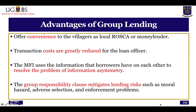The advantages of group lending include convenience for villagers in a format similar to ROSCAs or moneylenders, and greatly reduced transaction costs for loan officers, since the burdens of chasing up, monitoring, and screening are reduced. MFIs use the information that borrowers have on each other to resolve information asymmetry. The information that neighbours and friends have on one another becomes the foundation for the MFI's operations, and group responsibility mitigates lending risks such as moral hazard — where borrowers might misappropriate funds — as well as adverse selection.